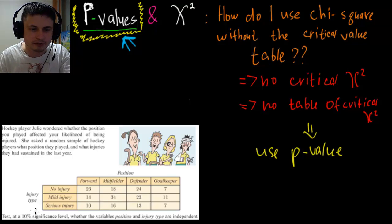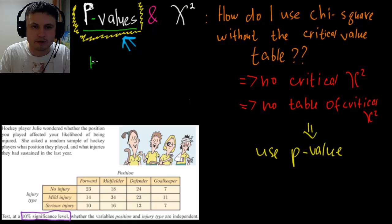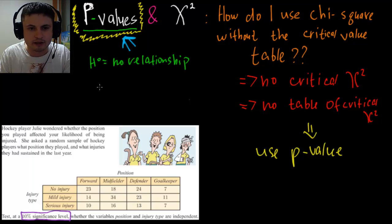And here's the question. So she wants to test this at 10% significance level and she wants to find out if the variable position and injury type are independent. So that's her null hypothesis here. Her null hypothesis is that basically these are independent values so there's no relationship, and she wants to know this with 10% accuracy.